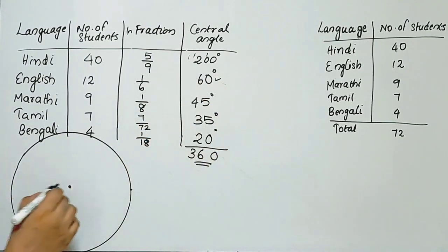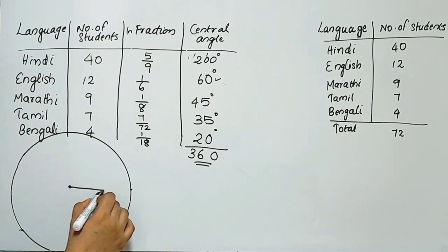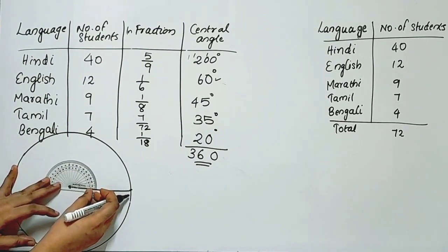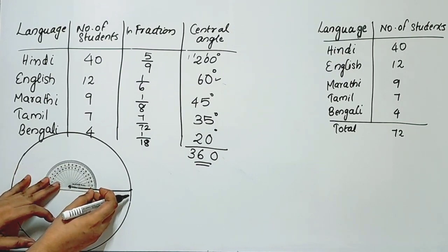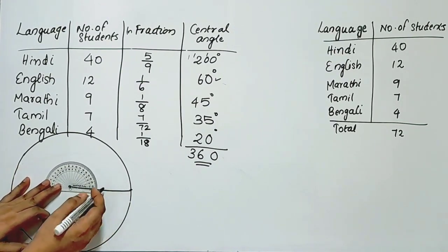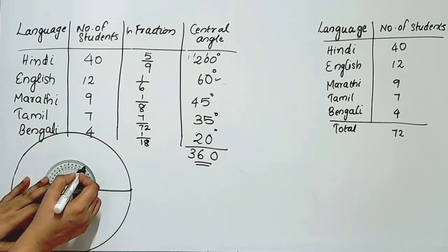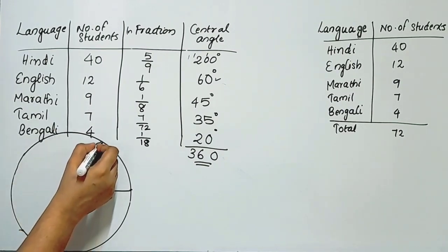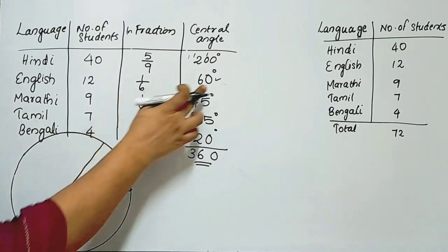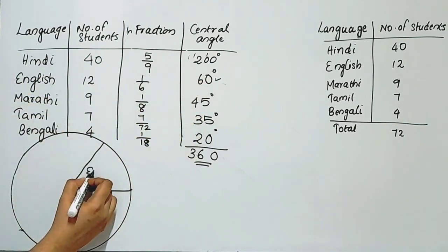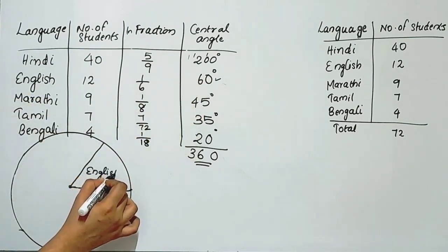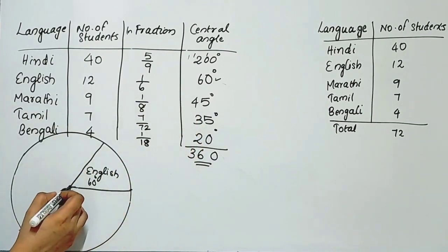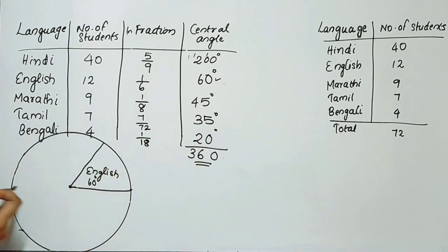We place the protractor at the center of the circle. We mark Hindi at 200 degrees. Then we place the protractor again and mark English at 60 degrees. We draw lines from the center to mark each sector.